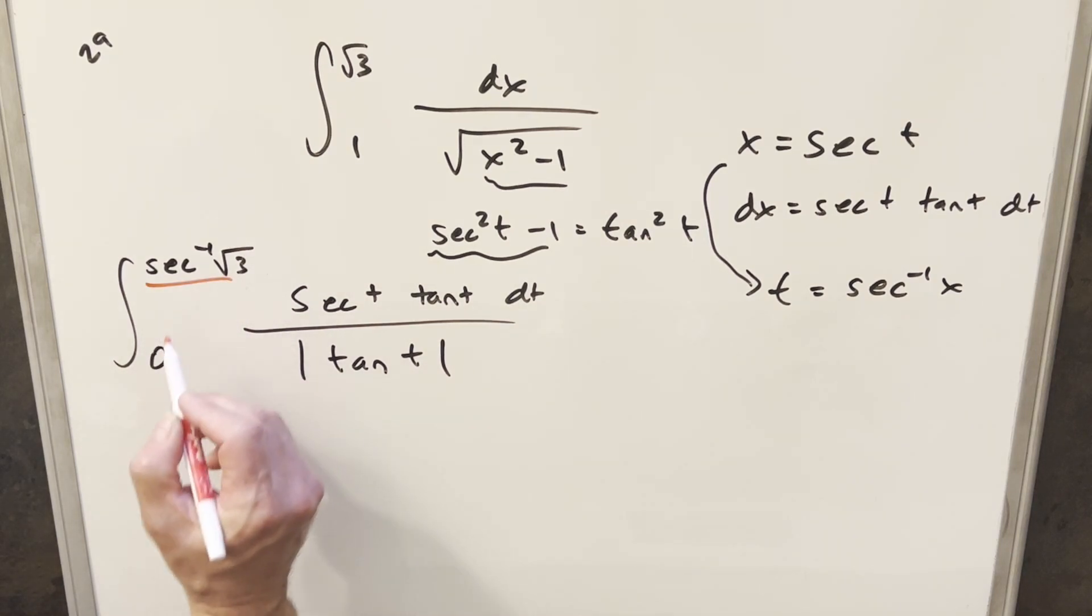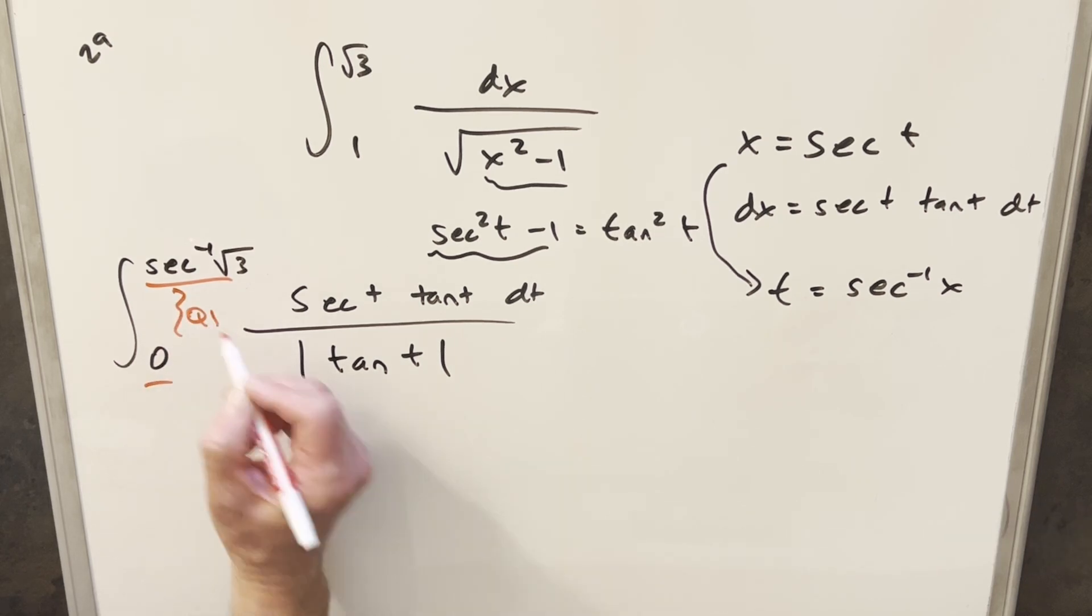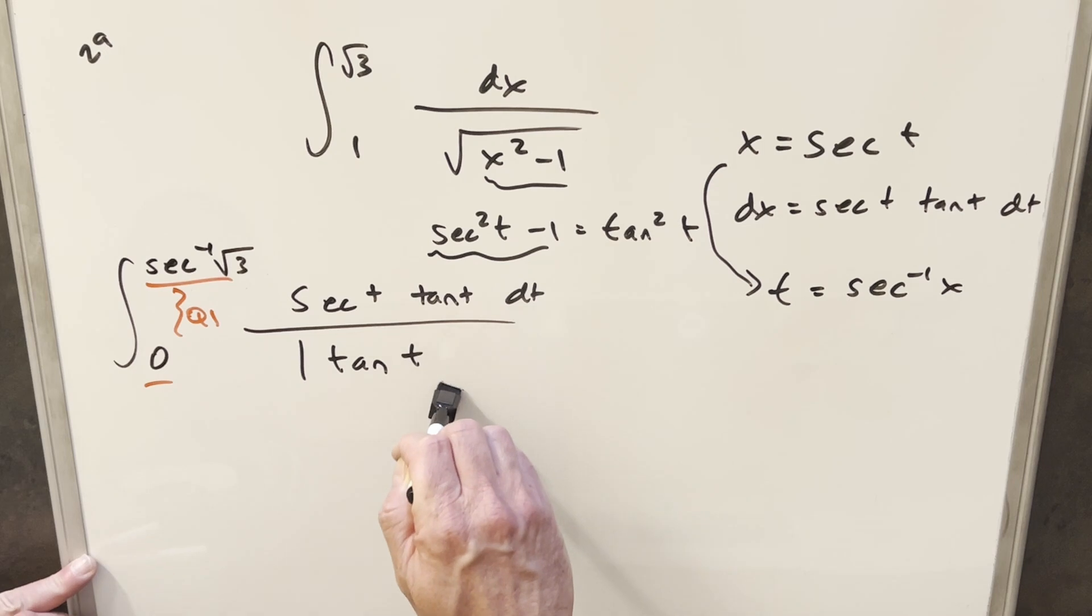But then if you look at these bounds, and you just actually focus on what this value is with a calculator, graph, whatever you have, this whole thing is quadrant 1. And so in quadrant 1, tangent's always going to be positive, so we'll just drop the absolute value here.